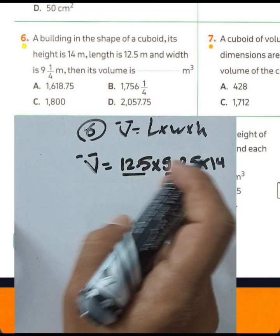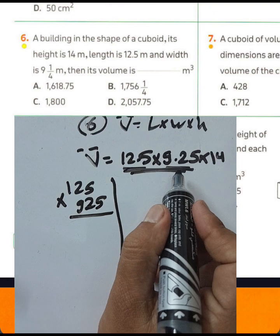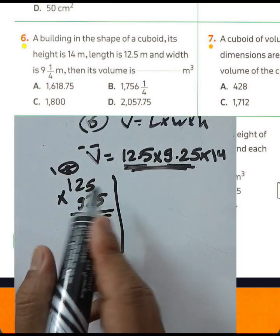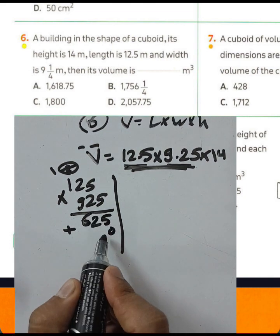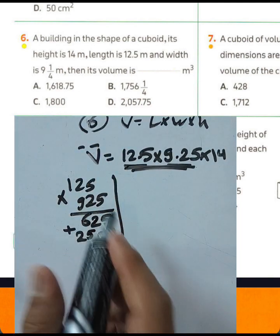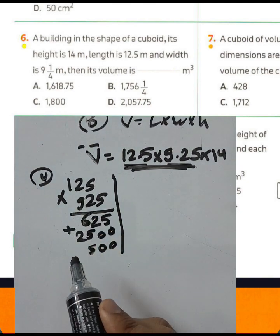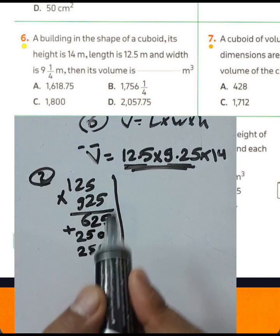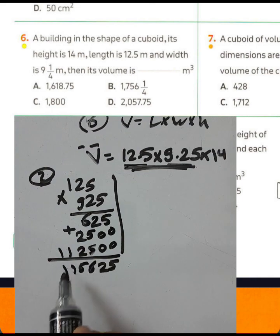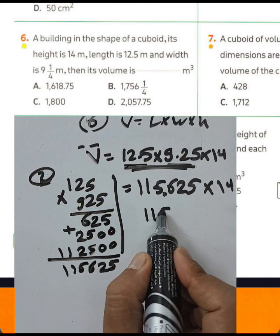Multiply 12.5 by 9.4: write 125 times 94, placing the point after three places in the result. Step through: 5 times 5 equals 25 (write 5 carry 2), 2 times 5 plus 2 equals 12, 1 times 5 plus 1 equals 6, then the second row: 2 times 125 equals 250, and 9 times 125. Summing gives 11562.5, with the point after three places.